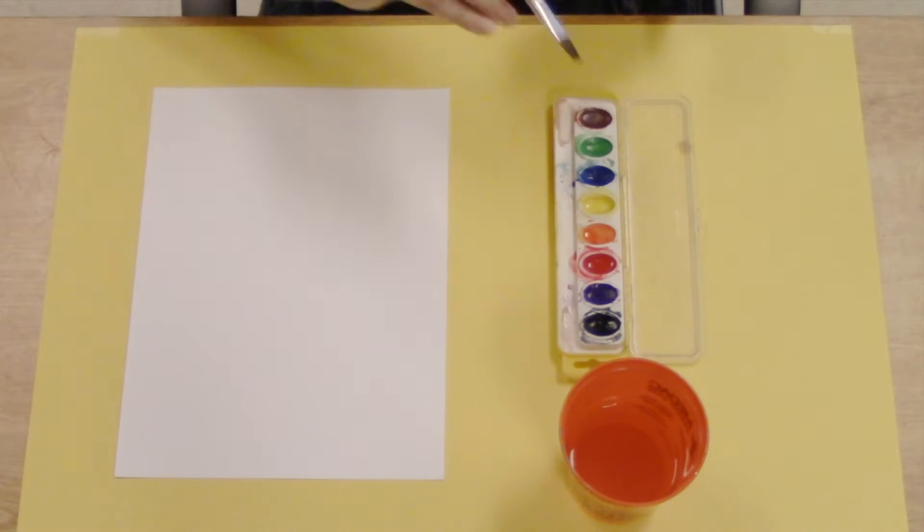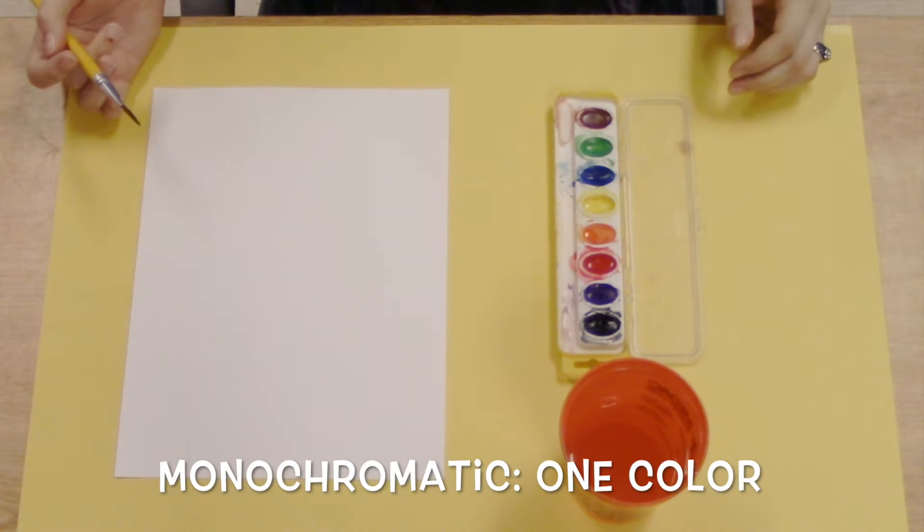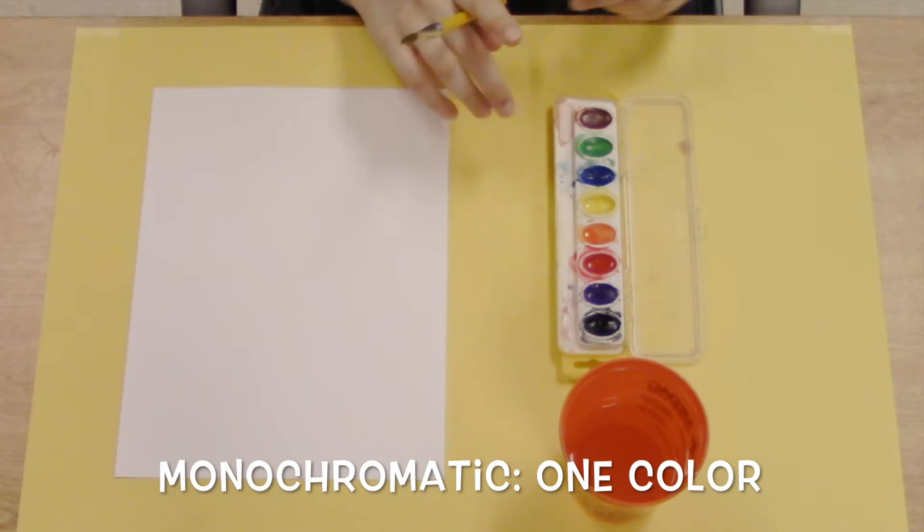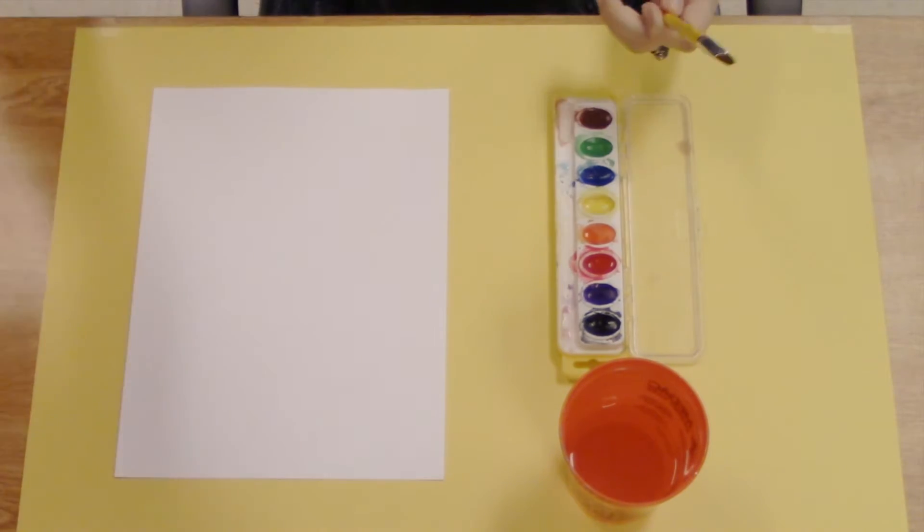For this particular assignment, we'll be using a monochromatic color scheme, which means we'll be sticking to one color. The construction paper I chose is red, so I'll also be using red for this project.